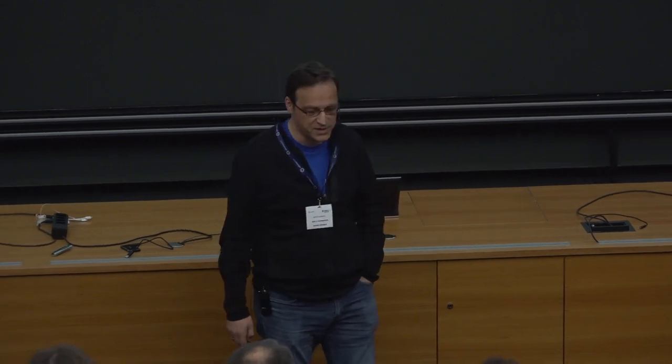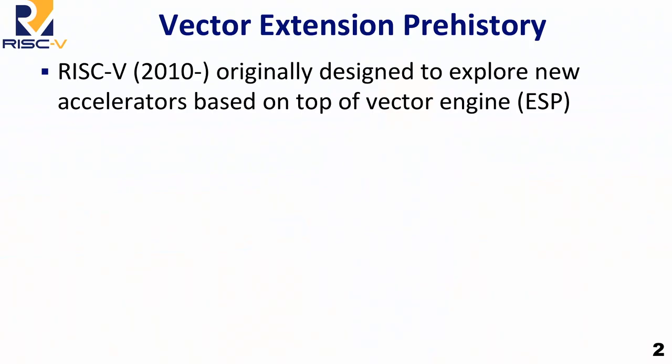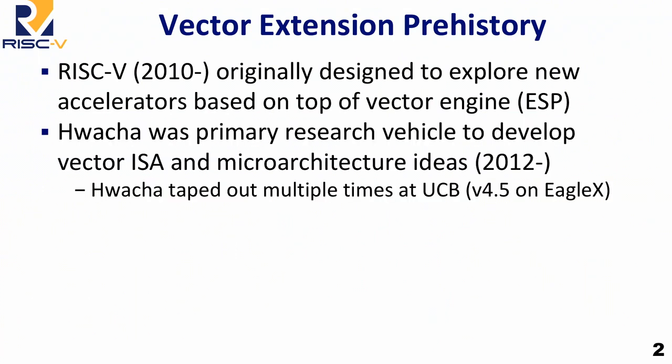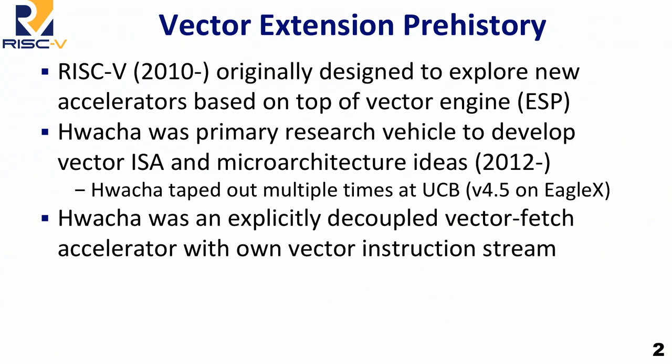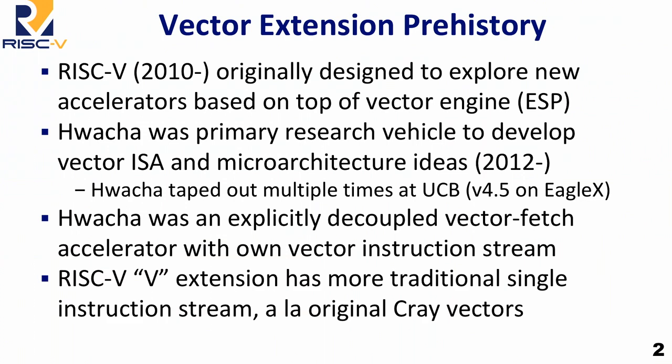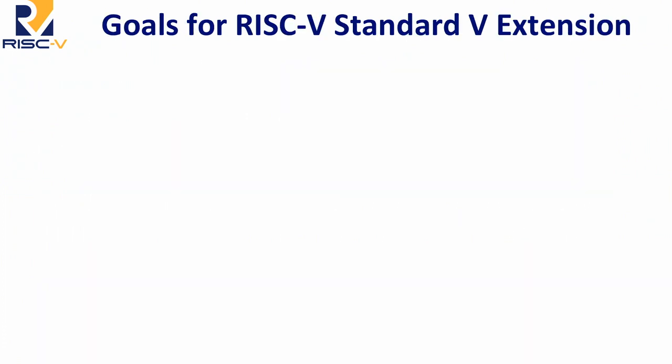I'll talk about the prehistory. When we started RISC-V, it was actually to do vector-based research, and the V was kind of a pun on vectors. At Berkeley, we built this thing called Huacha, which was a research vehicle, and we taped it out many, many times. There's an explicitly decoupled vector-fetching slider with its own vector instruction stream. For the RISC-V extension, we want something more traditional, a single instruction stream, Cray-style vectors. And this is kind of where vectors came from.